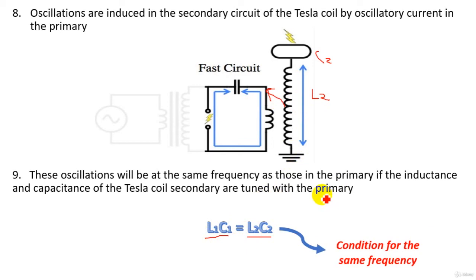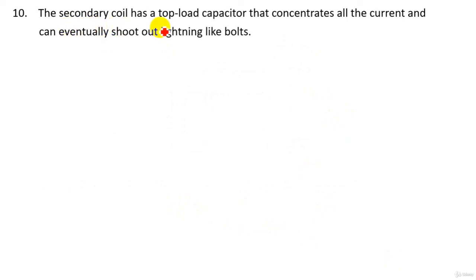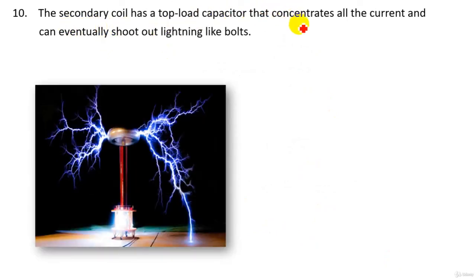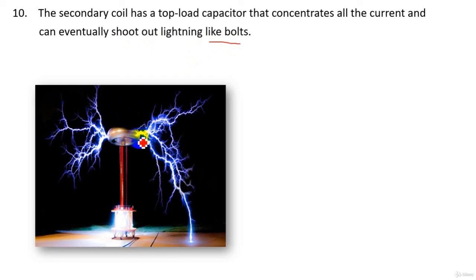L1C1 and L2C2 are adjusted so that L1C1 equals L2C2, ensuring the oscillations in the primary and secondary circuits are at the same frequency. The secondary coil has a top load capacitor that concentrates all the current and can eventually shoot out lightning-like pulses — producing sparks and lightning from the top load of the Tesla coil to ground.